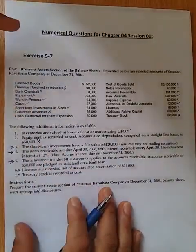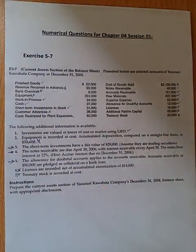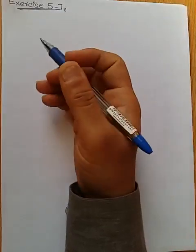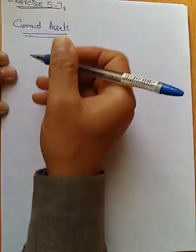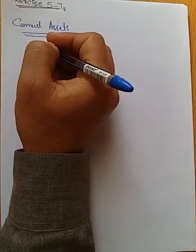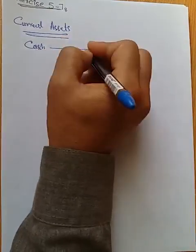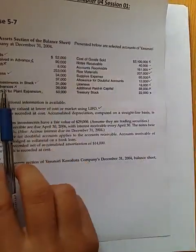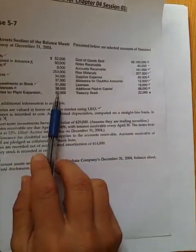Let's solve the numerical. You can write the name of the company and other things, but we are only preparing a partial balance sheet so there's no need to follow a full format. I'll just put a heading here of 'Current Assets.' The very first current asset we have is cash. There was some information related to cash — look at this.